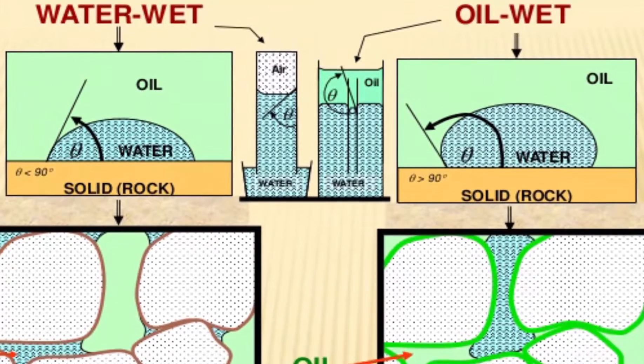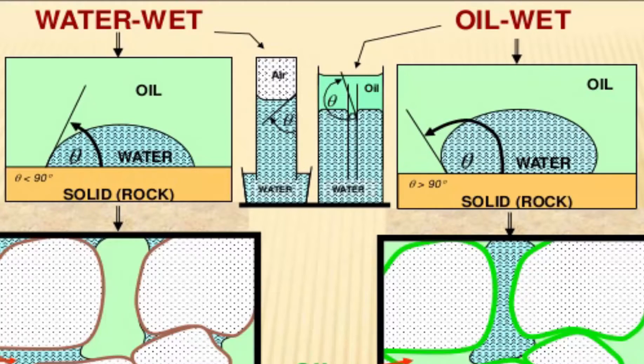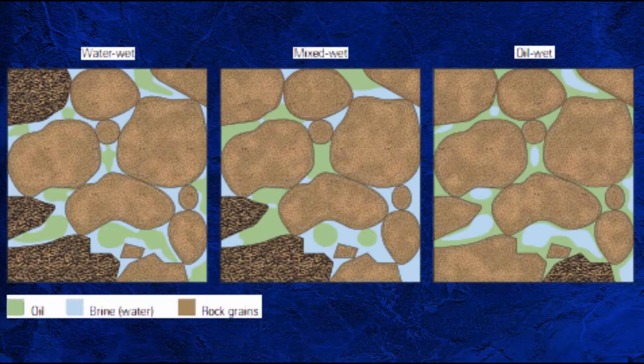Often you will find that wettability is treated as a binary switch. The rock is either water-wet or oil-wet. This is an oversimplification of the complexity of wetting physics in reservoir rock. In reality, wettability is a continuous spectrum with strongly water-wet and strongly oil-wet at opposite ends.